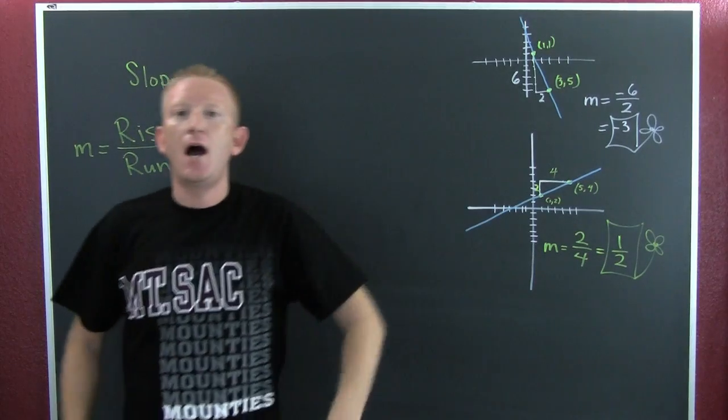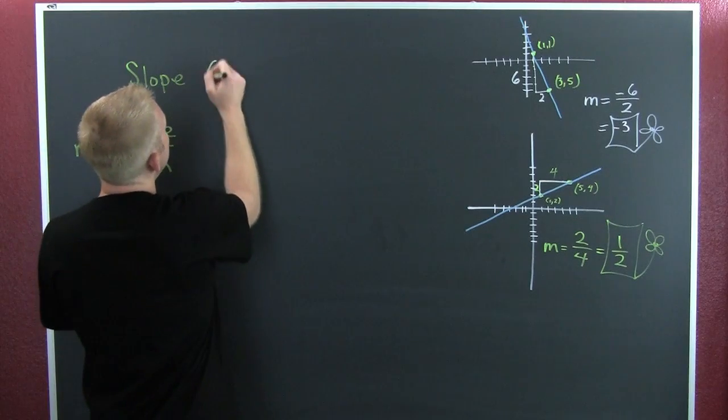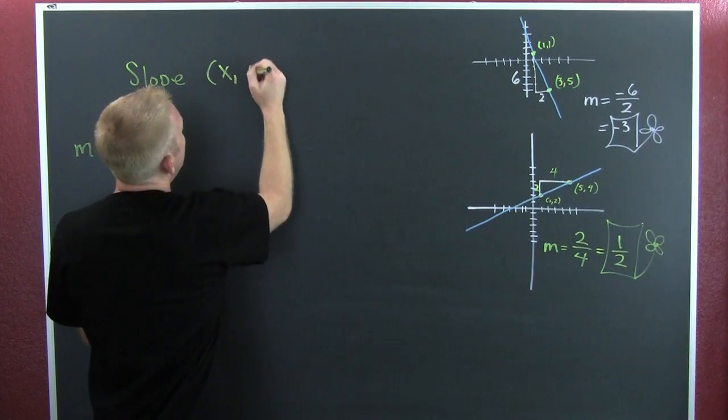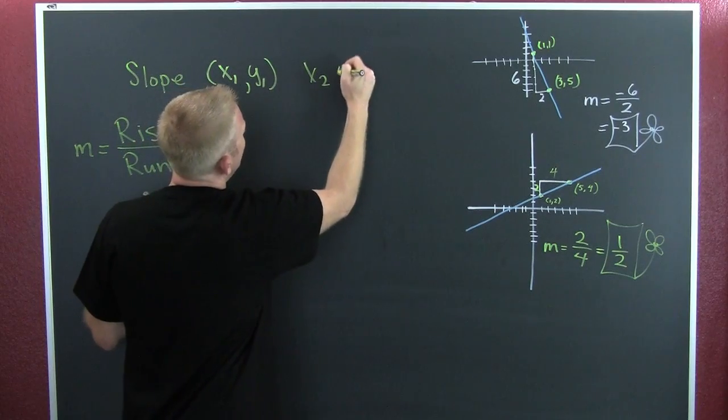I want to find the slope, but I want to find the slope between two points. What am I talking about? Between two points I'm talking about an x1 and a y1, and also an x2 and a y2.